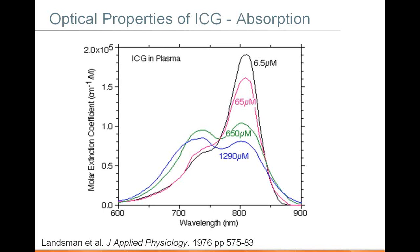Looking at the optical properties of ICG — the absorption spectrum — it absorbs in the near-infrared. At very dilute solutions, there's a nice peak right around 790 nanometers. As it gets more concentrated in solution, you start to see additional excitation peaks showing up around the 730–740 nanometer range. This tells us that at higher concentrations, ICG forms higher-order aggregates, so we really want to work in relatively dilute solutions in vivo if we want our signal to be as linear as possible.